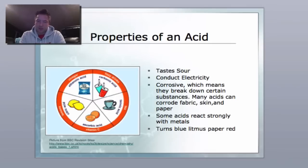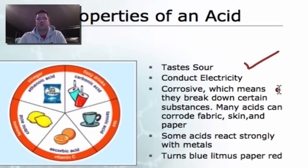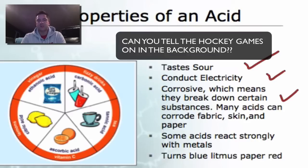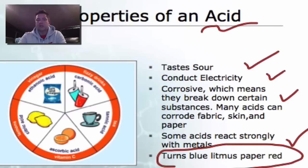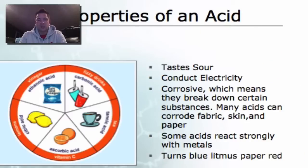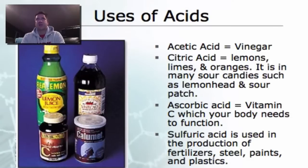Some properties of these acids are going to be that they taste sour. Think of something that tastes sour, I think about lemon juice, that's an acid. They're going to conduct electricity. They're corrosive which means that they can break down certain substances. They can corrode fabric, skin, paper. If you were to get them on your hands it's going to either irritate or eat away at the skin. Some react very strongly with metals and they're going to turn blue litmus paper red. We're actually going to work with litmus throughout this unit to help identify substances as acidic or basic.